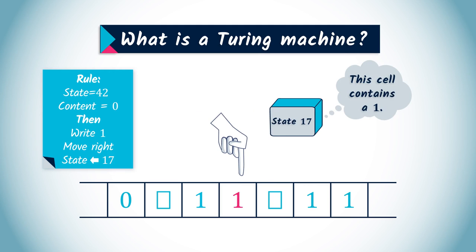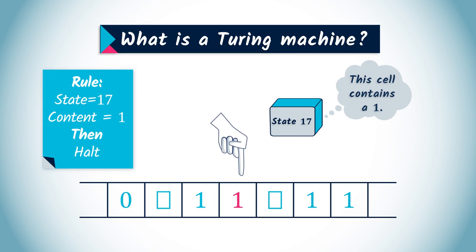One action of the machine is a bit different from others. It is called halting. It consists in interrupting the work of the machine. The output of the machine is the content of the tape when the machine halts.